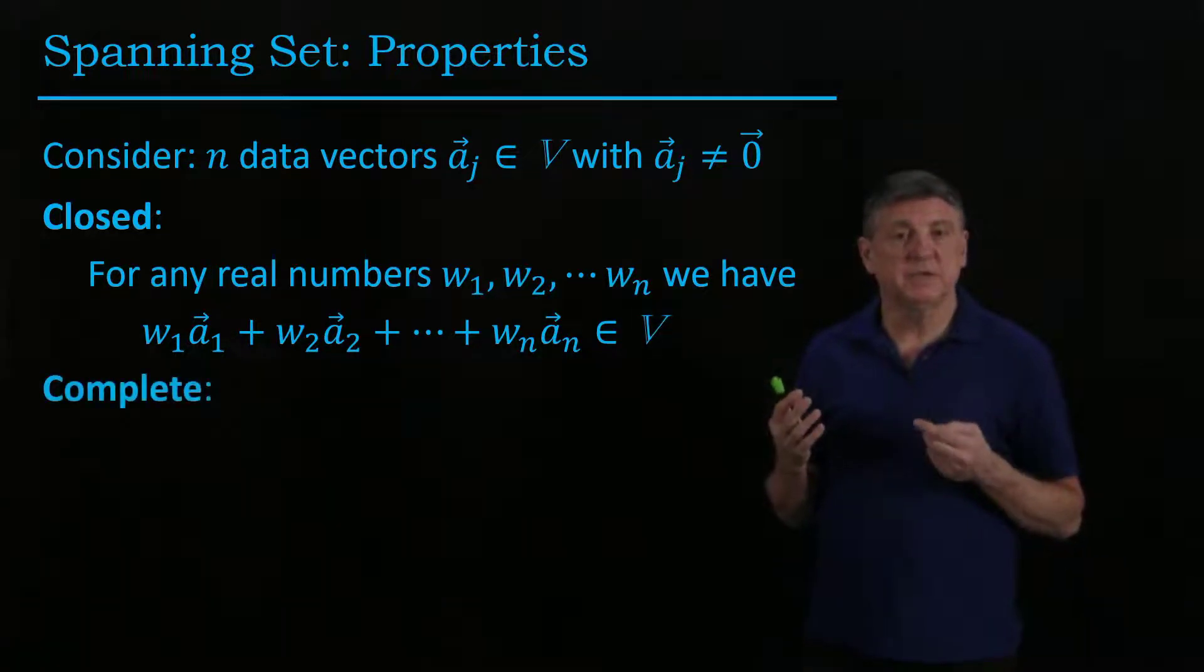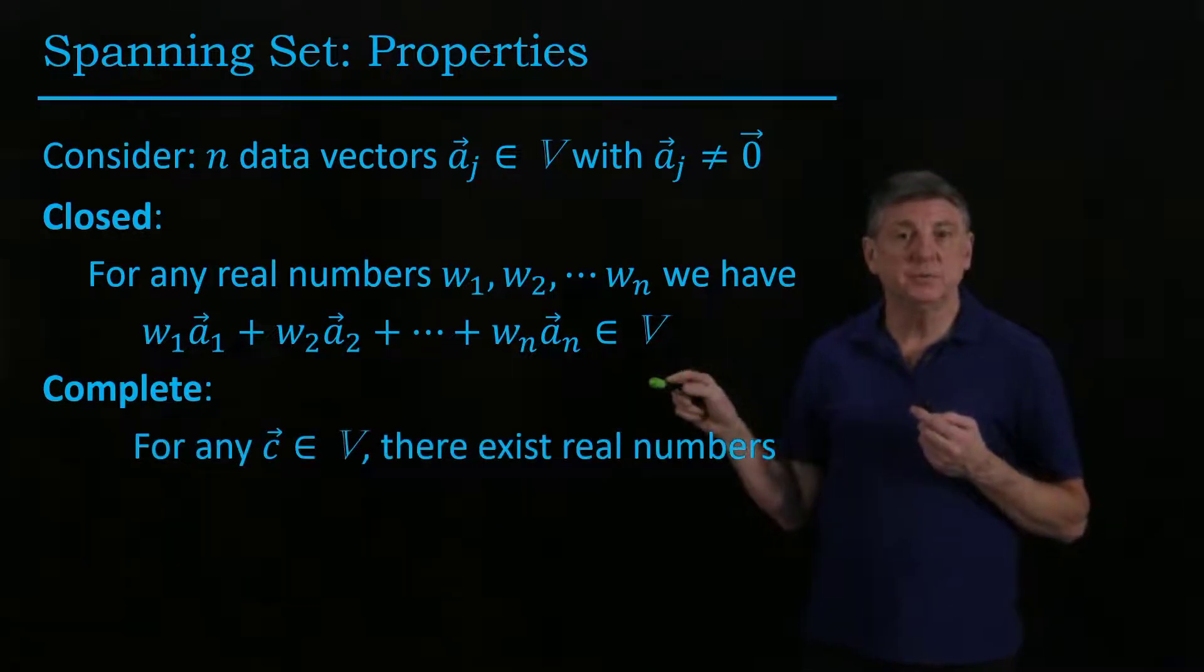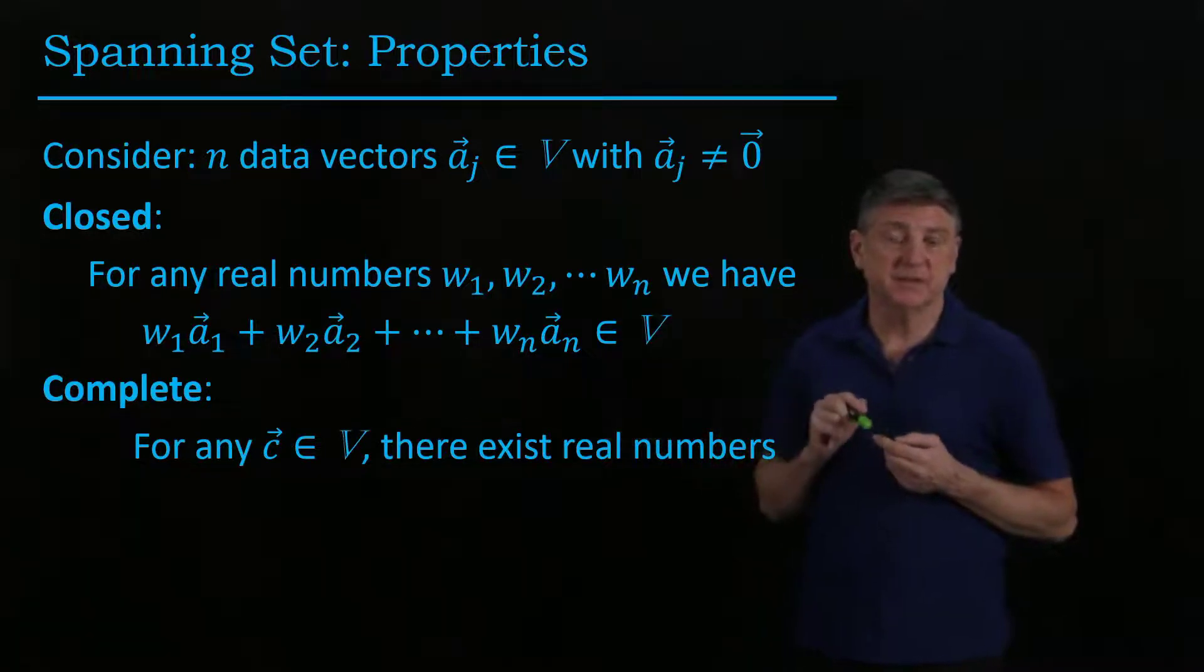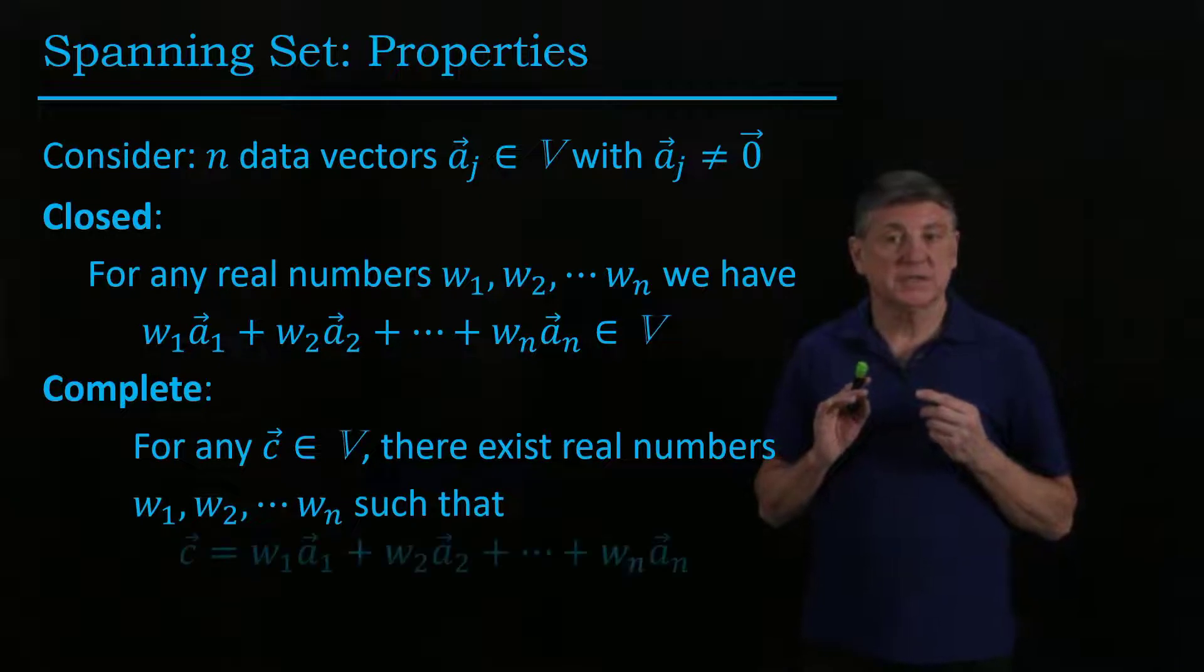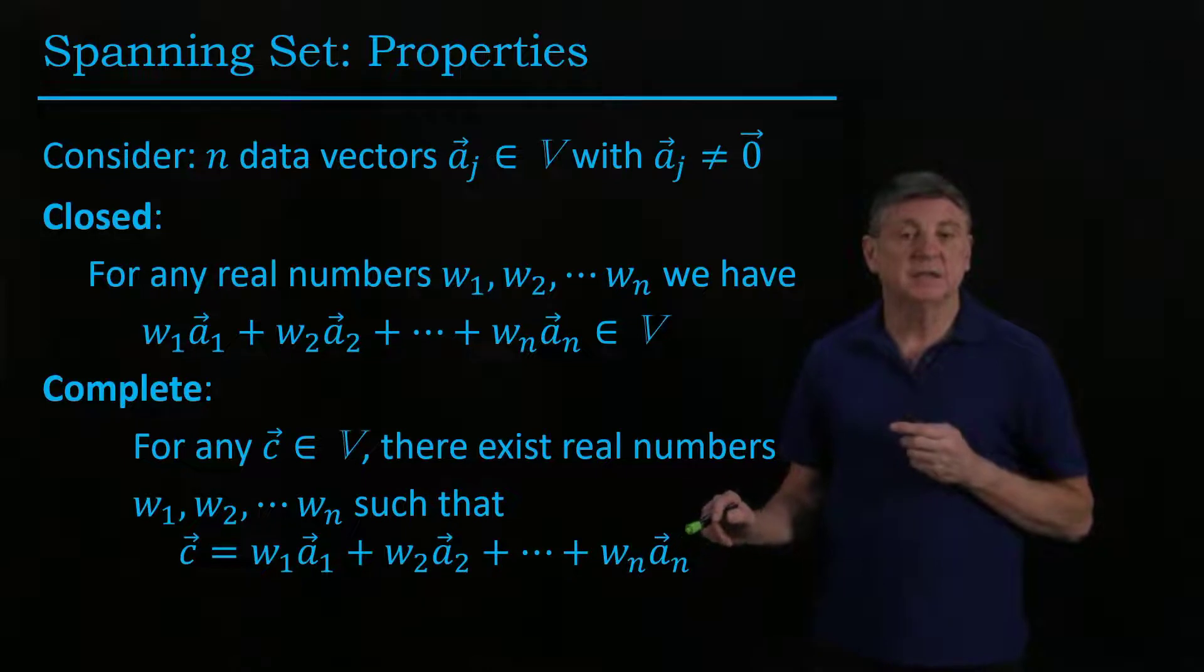A related concept is completeness. If you give me any vector c in the vector space V, then there exist real numbers such that I can reconstruct that vector as a linear combination of the vectors in the spanning set.